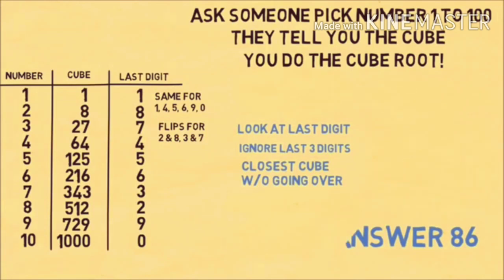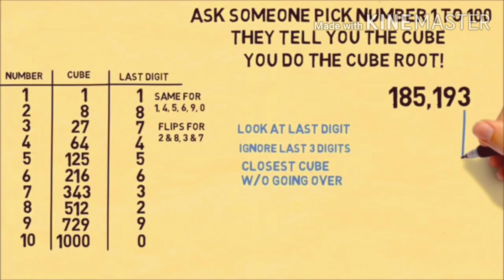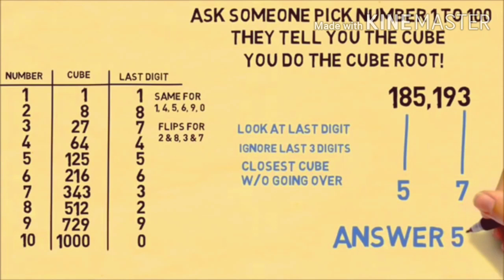Once you memorize this table, you'll be able to do this very quickly. Let's do another example: 185,193. We look at the last digit of 3, which corresponds to 7 because 3 and 7 flip. Then we ignore the last three digits and look at 185. That's closest to the cube of 5 without going over, giving us the answer of 57.